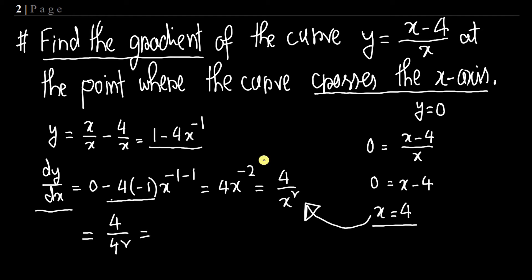We can cancel a factor of 4, leaving 1 divided by 4. So 1/4 is our answer — this is the value of the gradient where the curve crosses the x-axis.